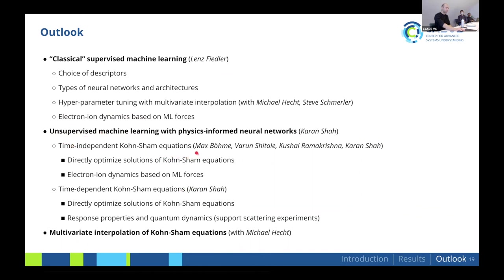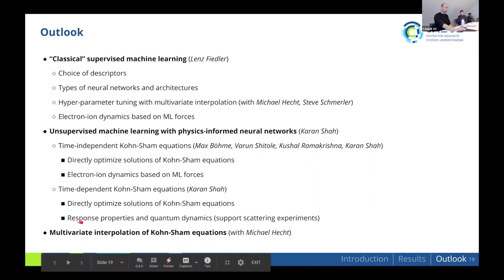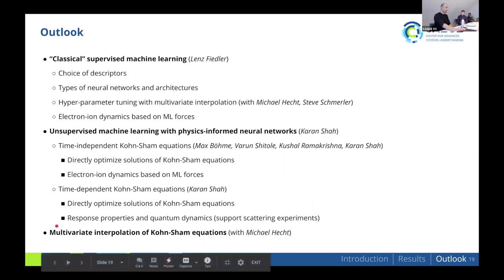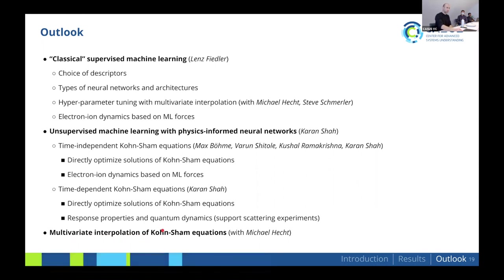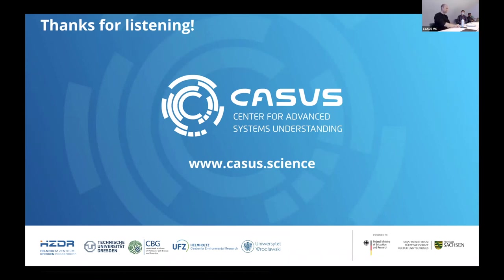We also want to look at physics-informed neural networks (PINNs) to solve or optimize the time-independent Kohn-Sham equations — potentially a more compact and accurate representation. Further, we want to apply PINNs to the time-dependent quantum equations to compute response properties and quantum dynamics directly, which is highly relevant to scattering experiments at facilities like XFEL. A third direction is multivariate interpolation for the quantum equations themselves as an alternative to machine learning.